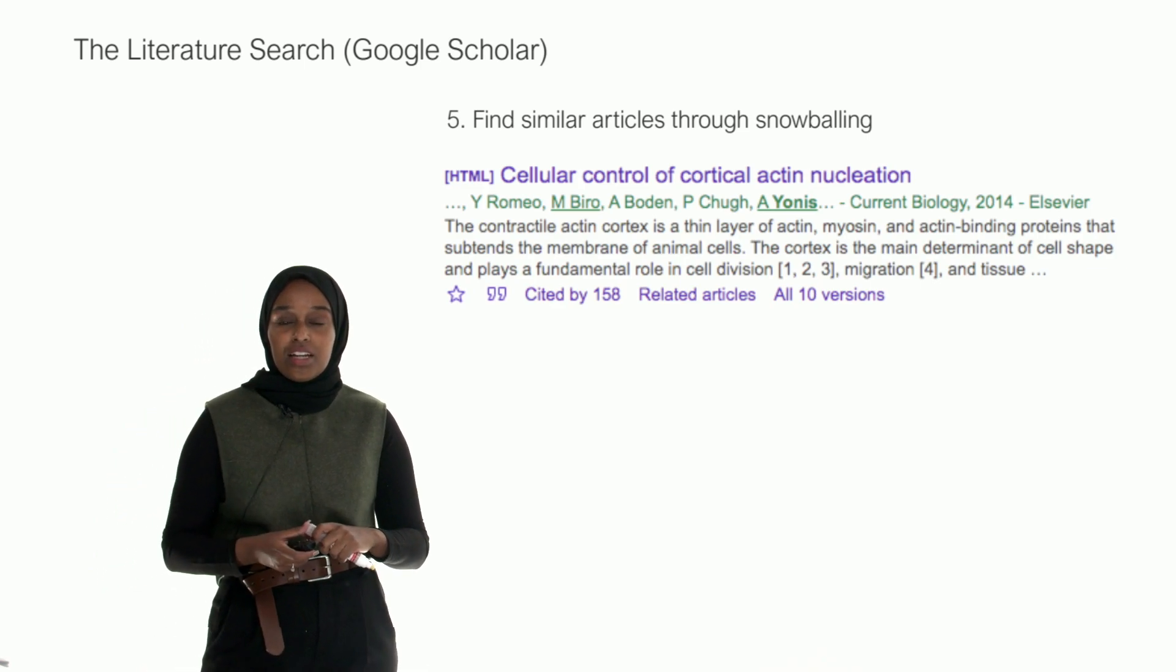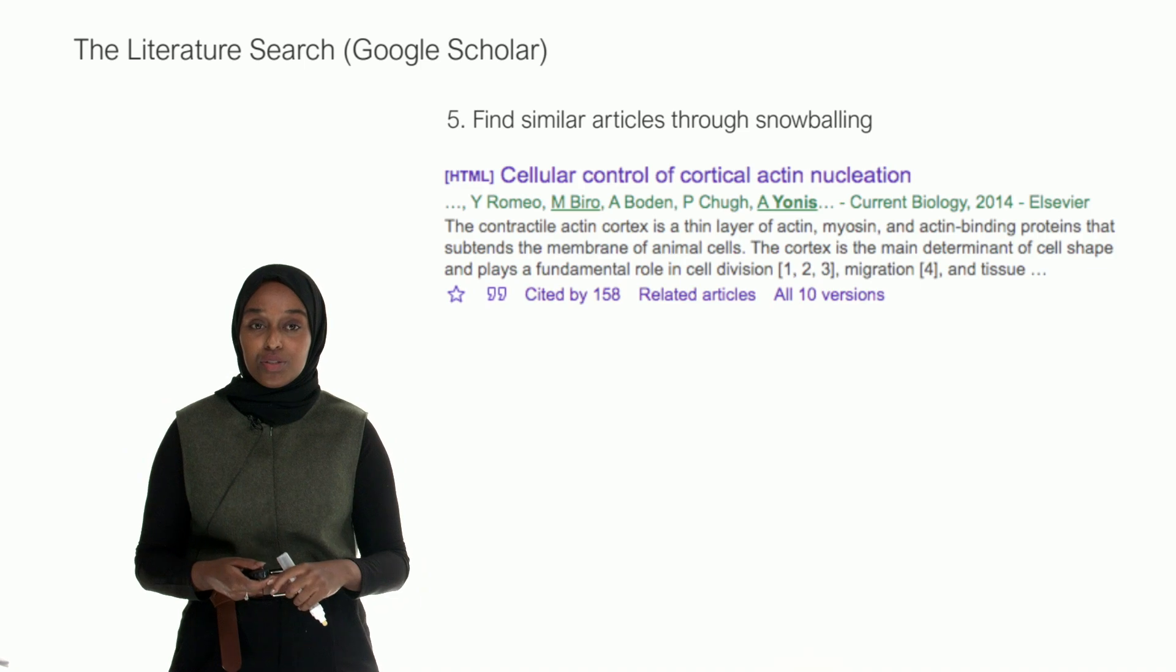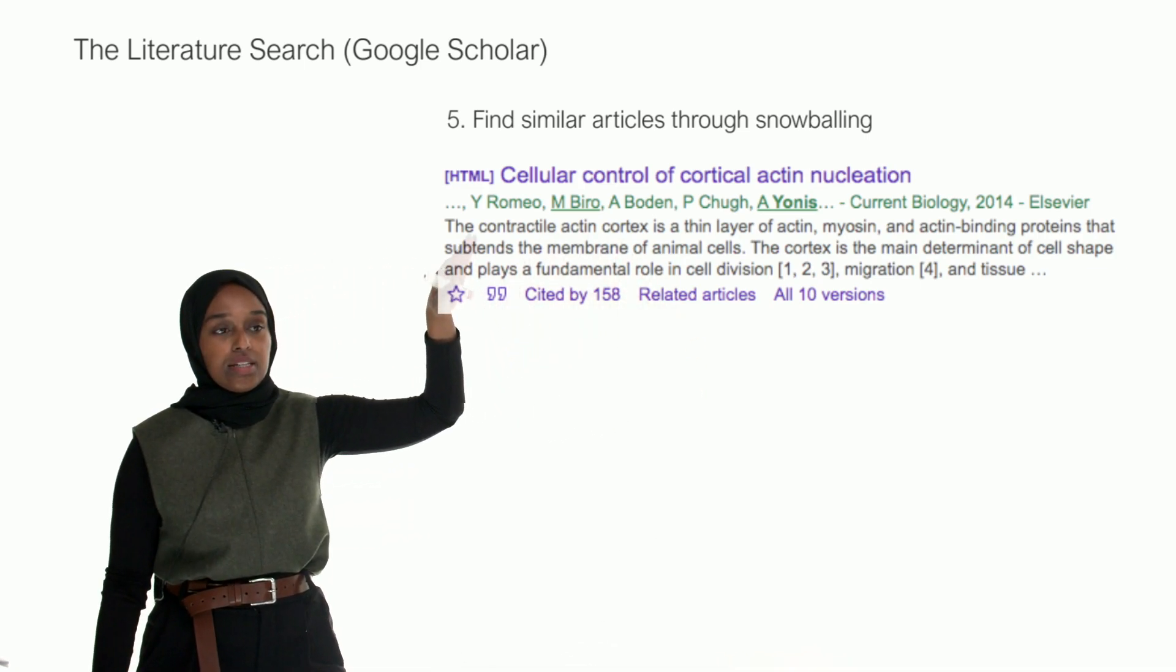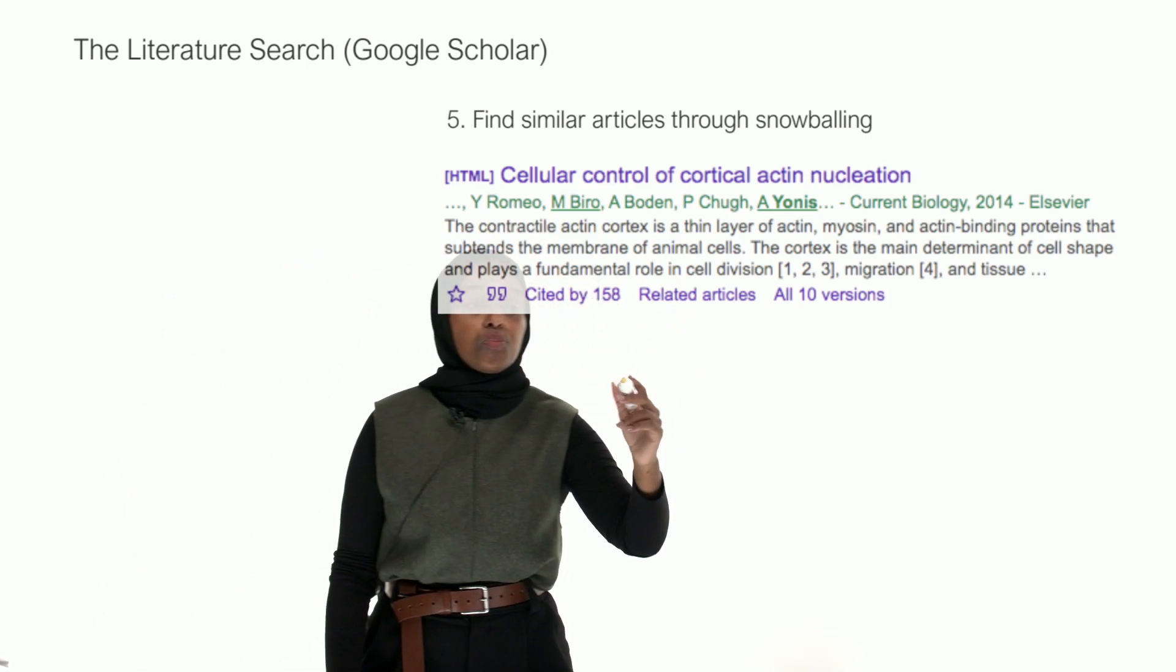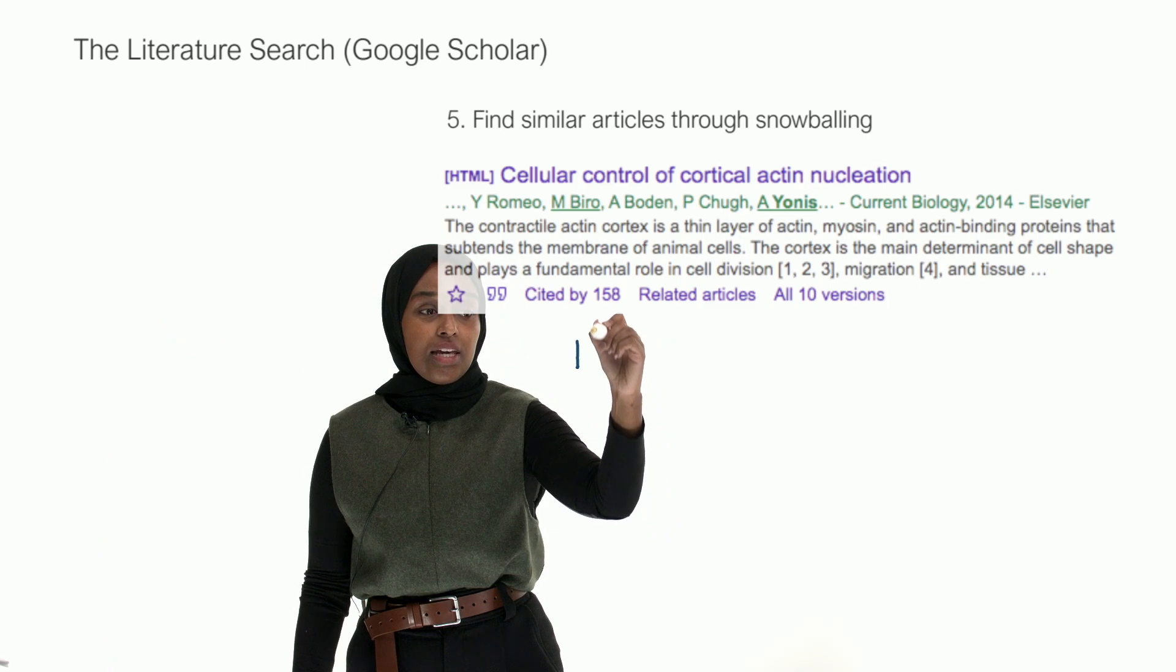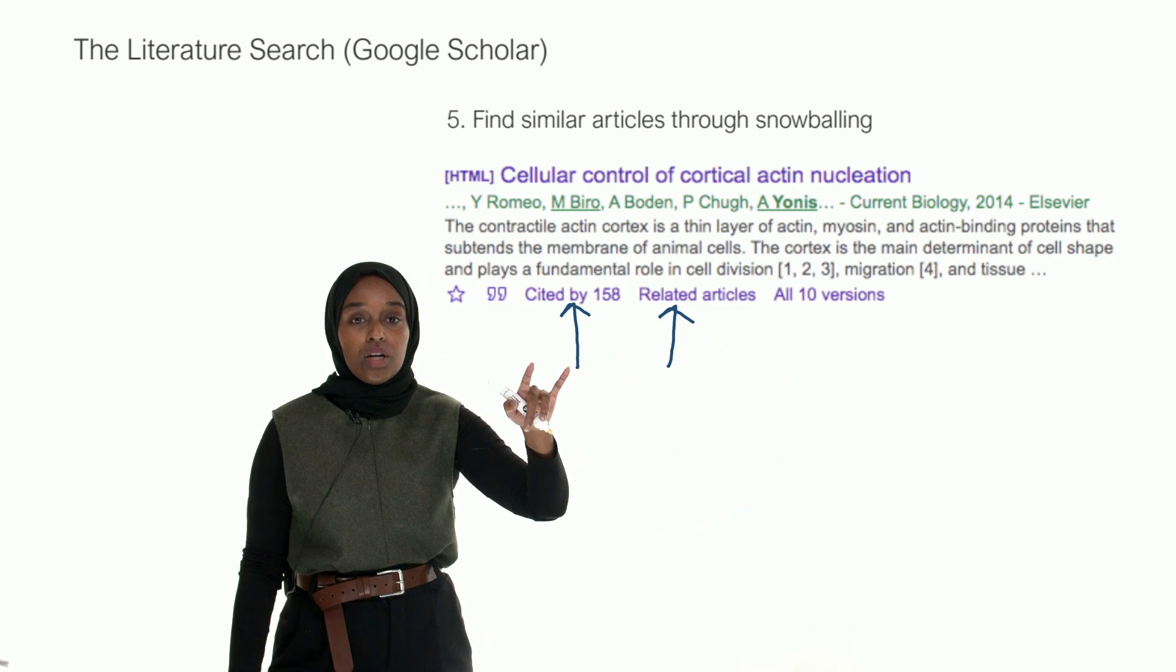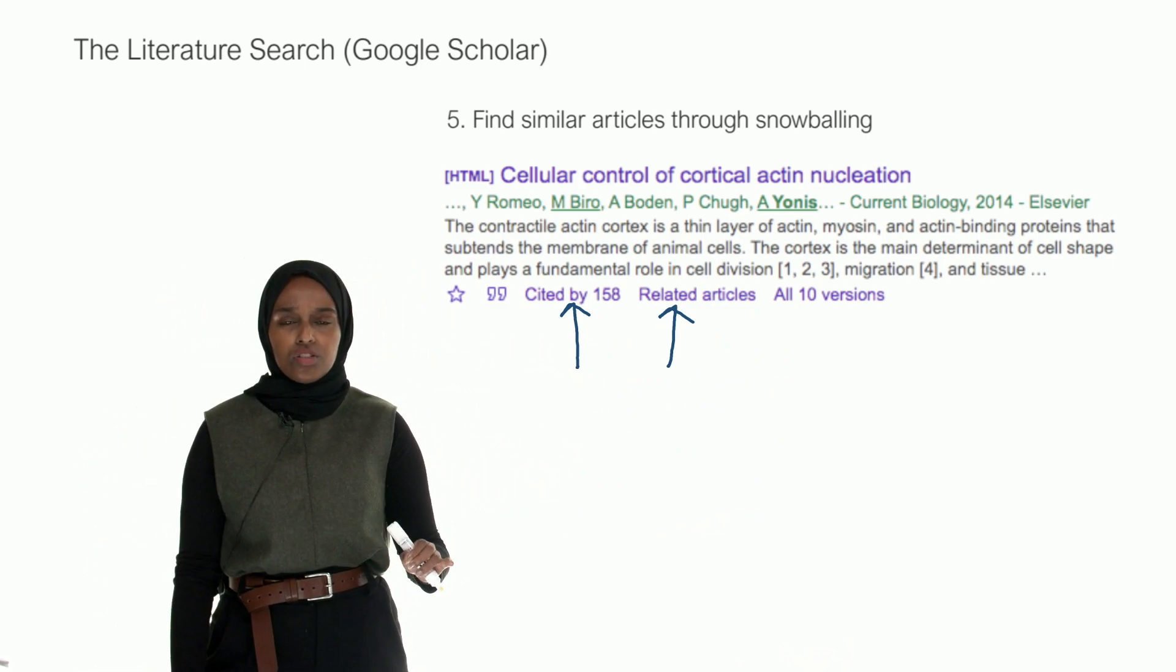You can then go in this kind of black hole of snowballing by finding similar articles. So I've taken an example. This is from Google Scholar. So here's a paper from 2014 that was published. And you can see these two points here - you have Cited By, and you also have Related Articles. Those are two tabs that you can click on, and they're really useful.